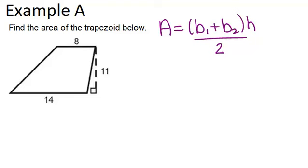And then divide by 2. So in this problem, 8 can be our base 1 and 14 our base 2 because those are the two parallel sides. And it actually doesn't matter, you could call 8 base 2 and 14 base 1. And 11 is going to be our height.